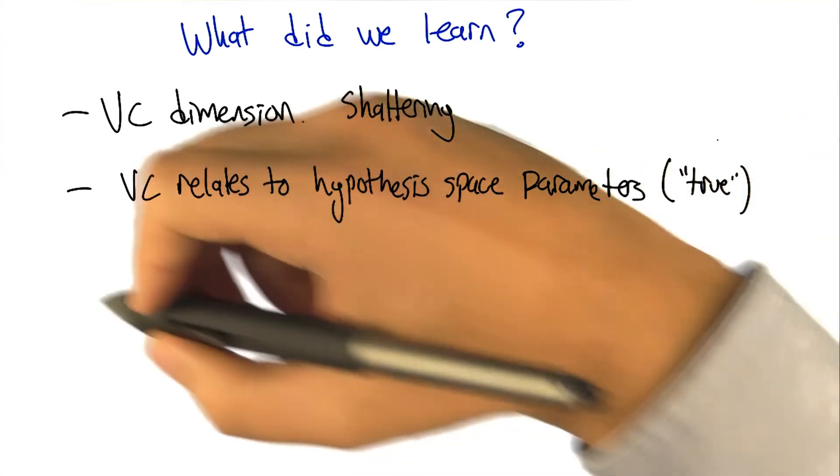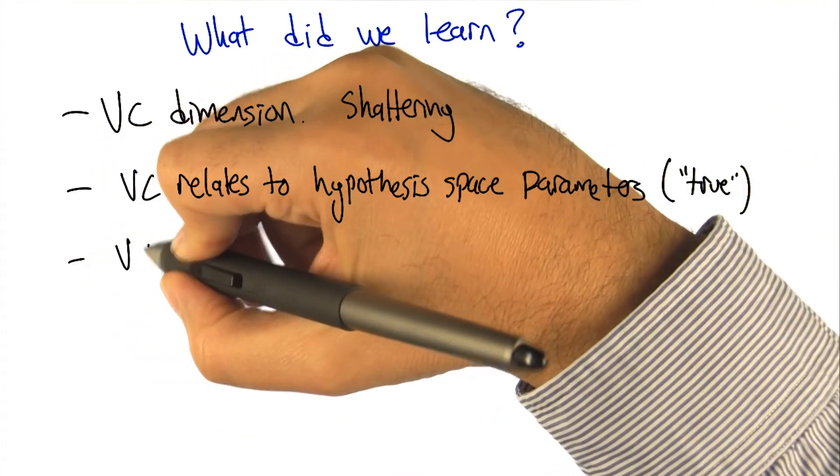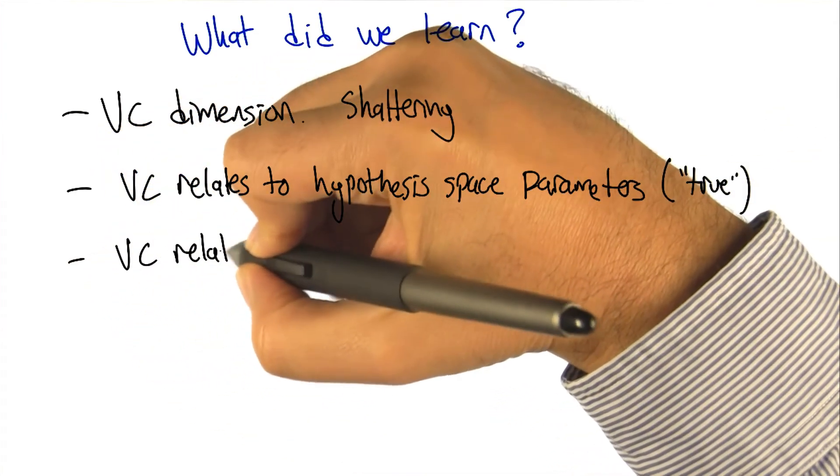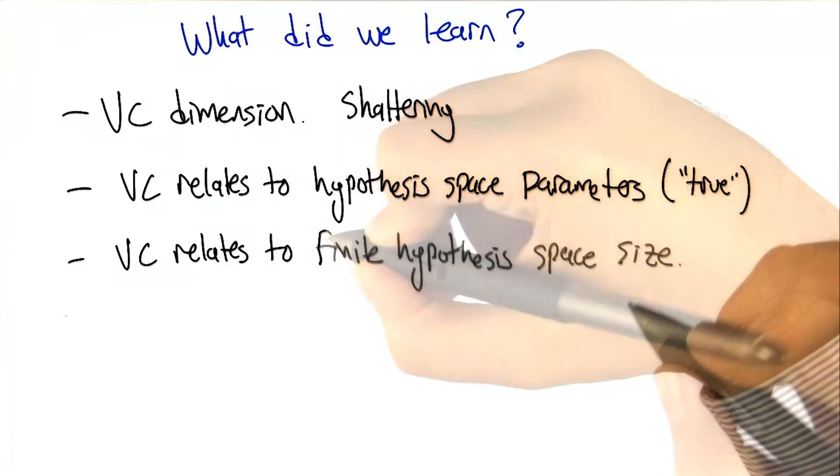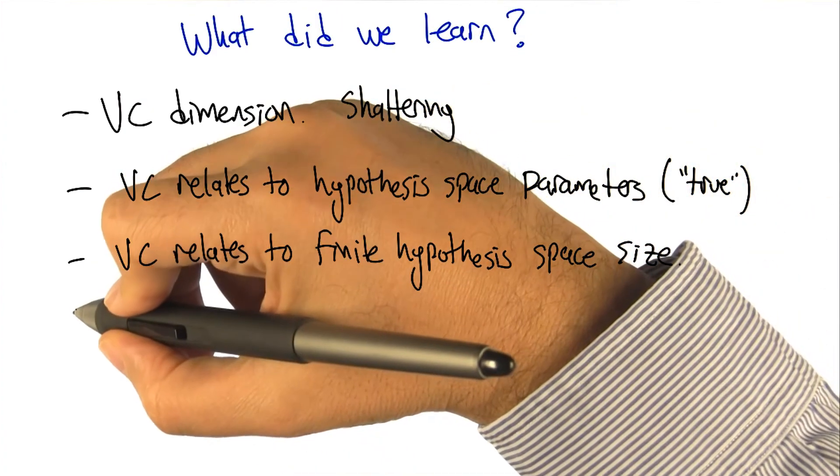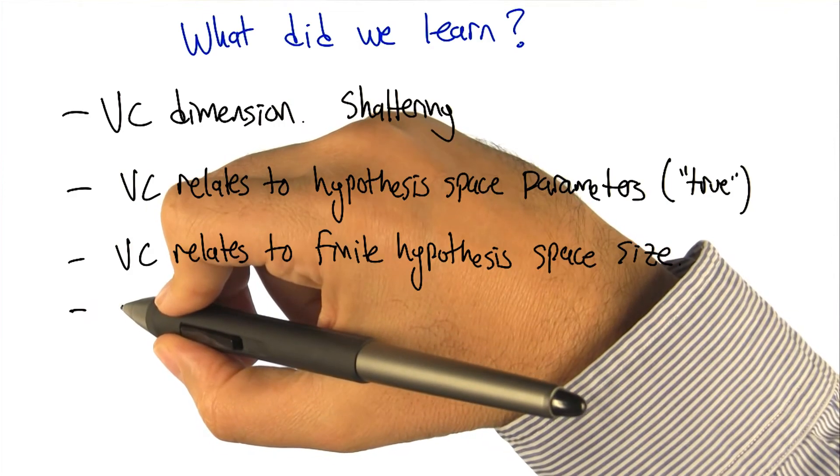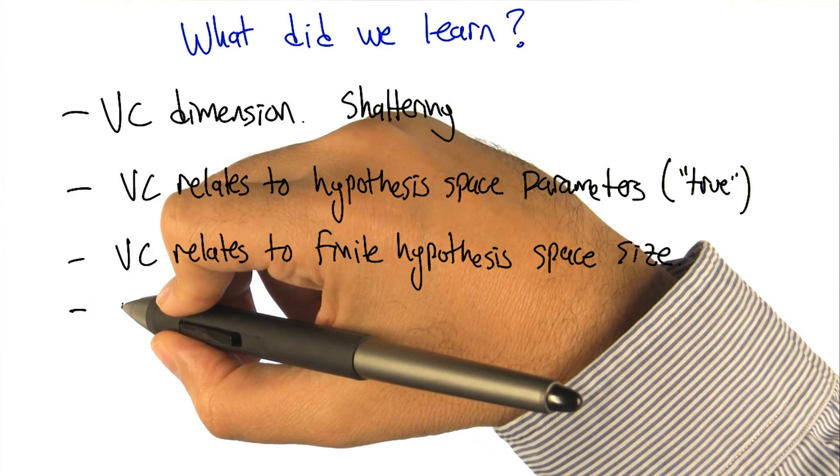All right. That's fair. We also saw how VC relates to the size of the hypothesis space for finite hypothesis spaces. And I guess we learned how sample complexity relates to VC dimension. And in fact, all these things are themselves related.